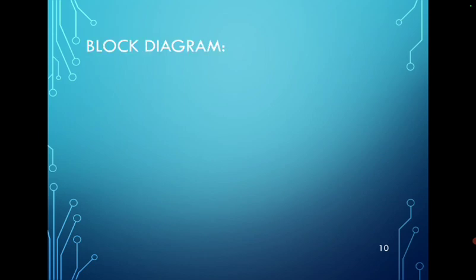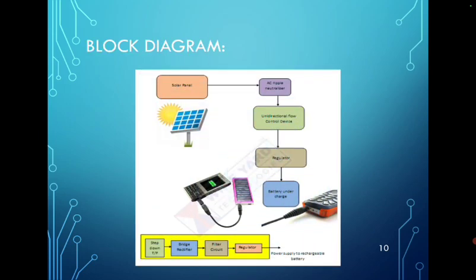Then the block diagram. This is the block diagram of solar panel: solar panel, AC ripple neutralizer, unit external flow control device, then regulator, then battery under charger. This is the second diagram, power supply to rechargeable battery. The rechargeable battery block diagram: first one, the step down transformer, voltage step down, then to the bridge rectifier, bridge rectifier converted to filter circuit, filter circuit, then regulator.